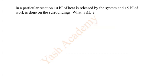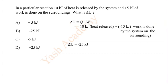In a particular reaction, 10 kilojoule of heat is released by the system and 15 kilojoule of work is done on the surroundings. What is delta U? Options: A +5 kJ, B -25 kJ, C -5 kJ, D +25 kJ. With the help of this equation we can calculate. So correct answer option is B: -25 kilojoule.